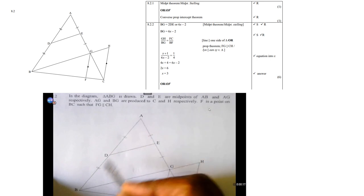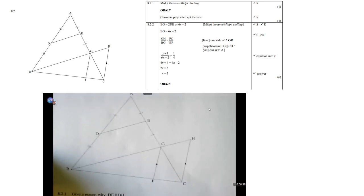Right, in the diagram, this is now question 8.2. So, in the diagram, ABG is drawn. As you can see there, ABG is a triangle. D, there's D and there's E are the midpoints of AB and AG, respectively. AG and BG are produced to C and H. So, they are lengthened in straight lines to C and H, respectively. F is a point on BC so that FG and CH are parallel.